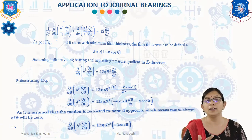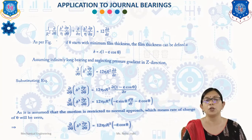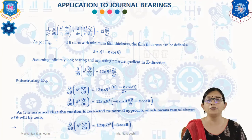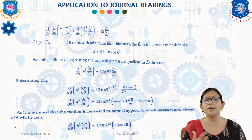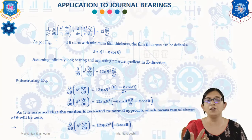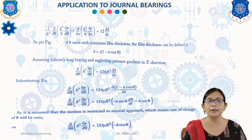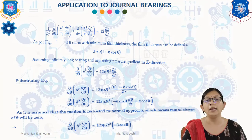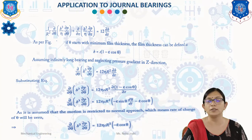Assuming that the motion is restricted to the normal approach means the rate of change of theta is zero, so dθ/dt = 0. With this substitution, the equation becomes: (∂/∂θ)(h³ · ∂p/∂θ) = 12η·c·r²·(−ε̇·cos θ).